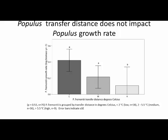What did we find? Overall, we found that Populus transfer distance alone did not significantly impact Populus growth rate. Although the graph may suggest differences, there is no statistical difference between any of the transfer distance groups, so we did not find an effect of Populus transfer distance on growth in the garden.